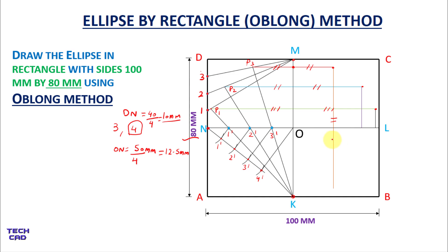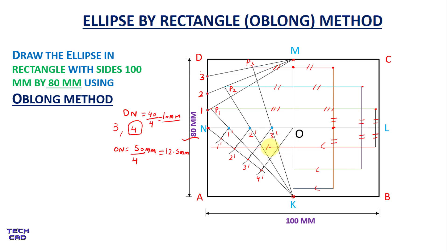Now extend these vertical lines further. We have the same measurements from these points, and the same from the other point as well. Now we are going to take lines towards the left side — extend them towards the left side with the same measurement.